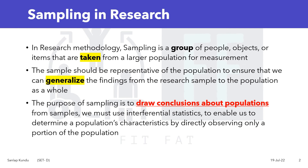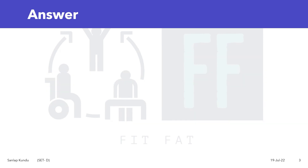Options B and C — segregating and dividing — basically mean separation from the population, and option D — implanting — means addition to the population. So the answer to the question is option A, sampling.